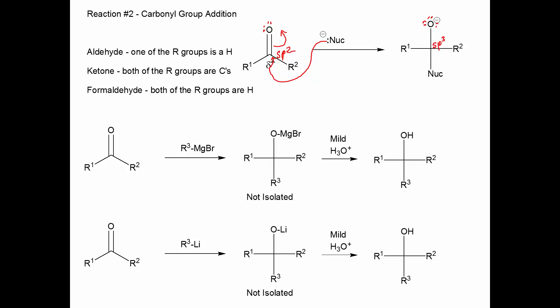So we're going to treat a ketone or aldehyde with a Grignard reagent, make the alkoxide, and treat it with mild H3O+. An organolithium reagent does exactly the same thing — we make a lithium alkoxide, and mild acid gives us the alcohol. An aldehyde doing this reaction will make a secondary alcohol. A ketone makes a tertiary alcohol. Formaldehyde makes a primary alcohol.